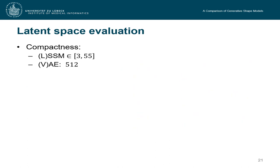Another important property we wanted to evaluate was the latent space of the methods. First of all, in terms of compactness, so shape models appear to be much more compact. They had up to 55 modes in our experiment. For the autoencoding models, this is a parameter we need to set. We set it here to 512. This is the length of our z vector, since this was the best setup for our experiments.